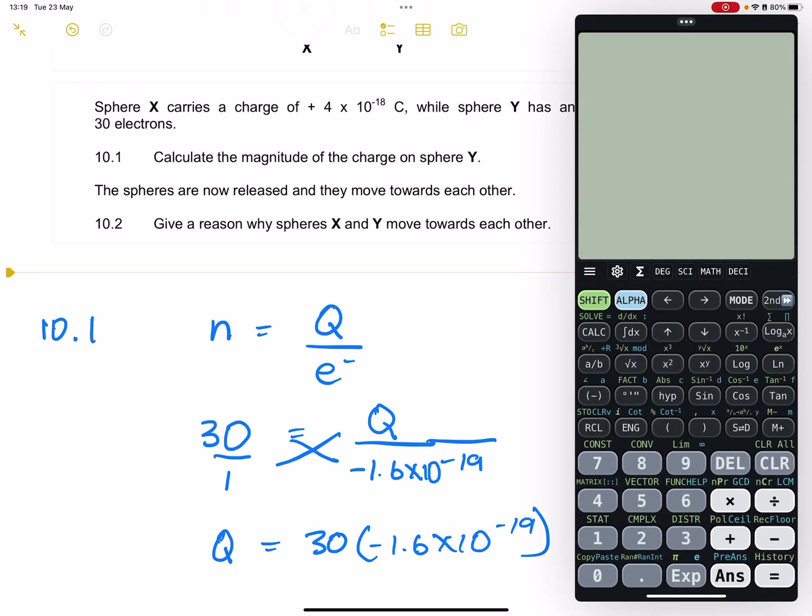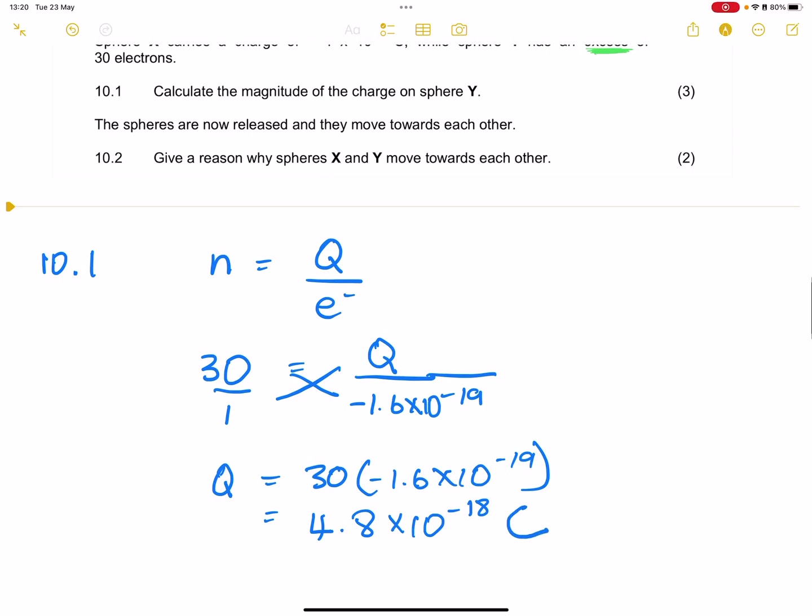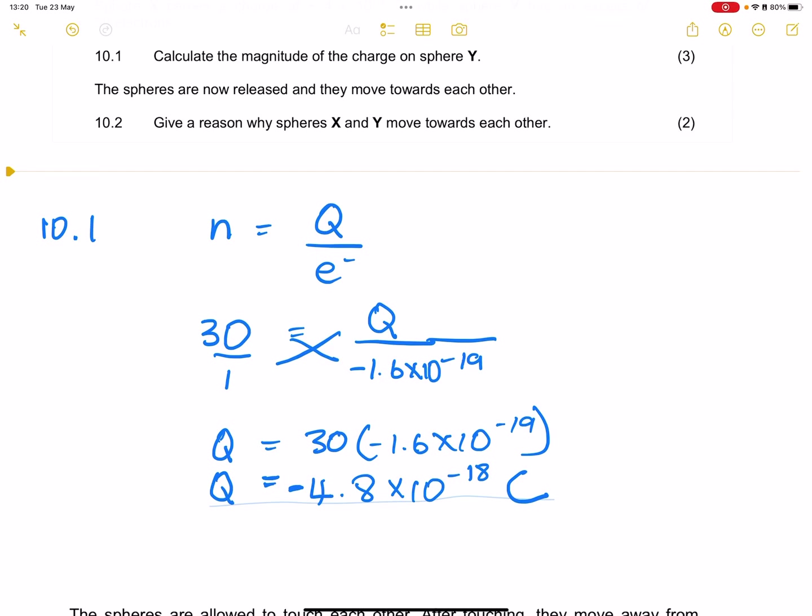So let's whip out a calculator there. So that will be 30 times negative 1.6 exponent... I get a value of 4.8. So that's 4.8 times 10 to the exponent minus 18. And remember that charge is measured in Coulombs. Now please remember, I almost forgot that negative there, just to remind us that it is negatively charged.